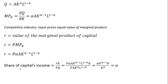Now we go to our formulation for the share of capital's income: R times K divided by P times Q. For R, I'm plugging in the value of the marginal product of capital, and that's still being multiplied by K. So we have the value of the marginal product of capital times K in the numerator, and price times Q in the denominator. For Q, I'm just going to plug back in the production function. The P's cancel, the A's cancel, and the L terms — L raised to the 1 minus alpha — cancel as well.